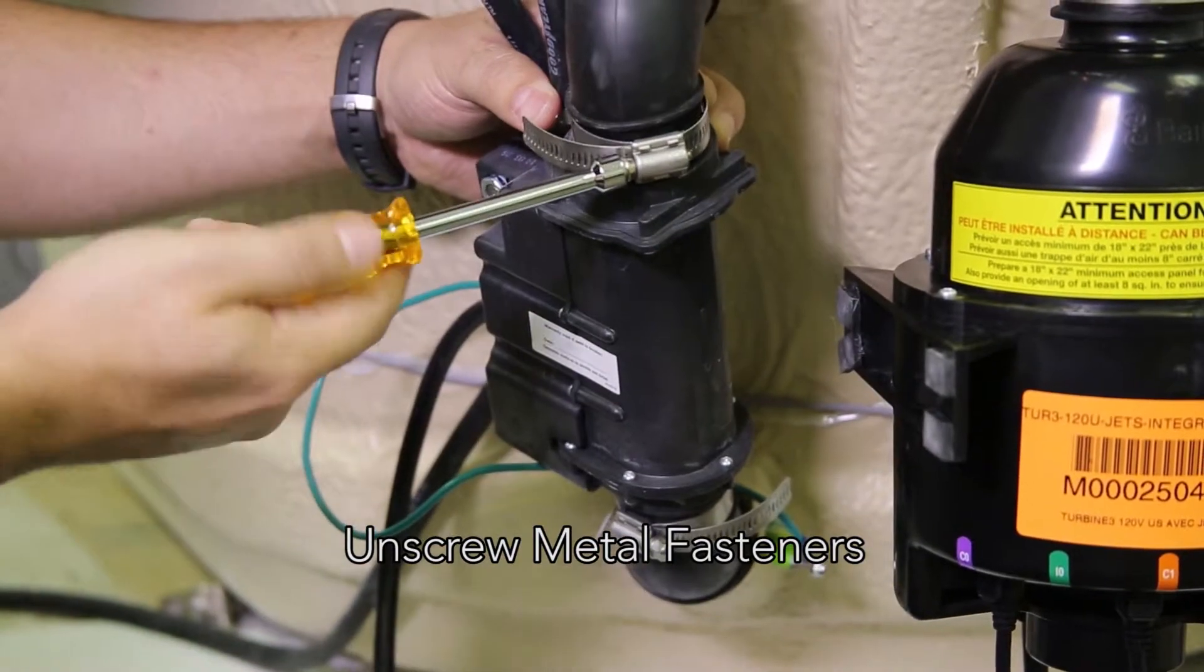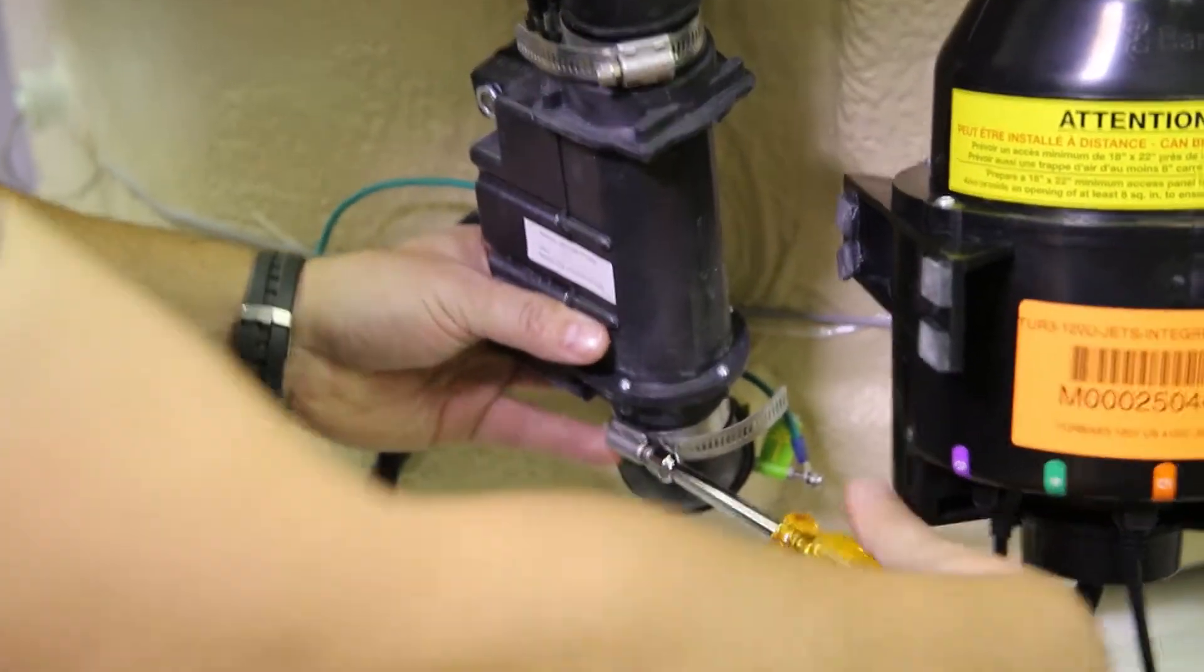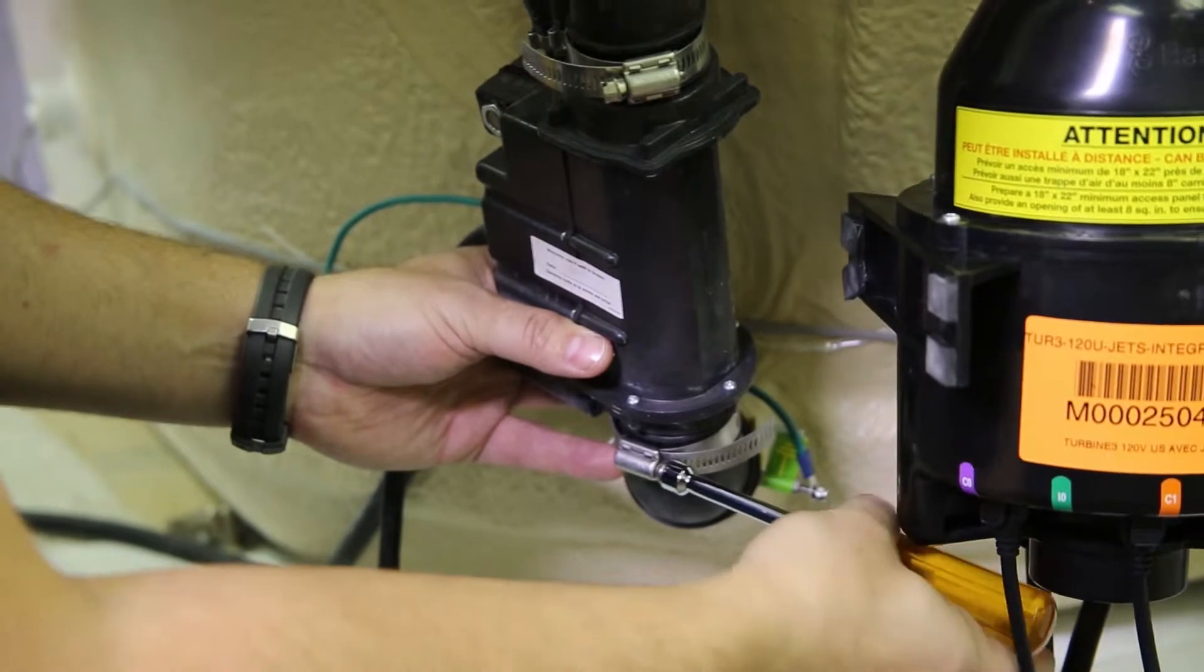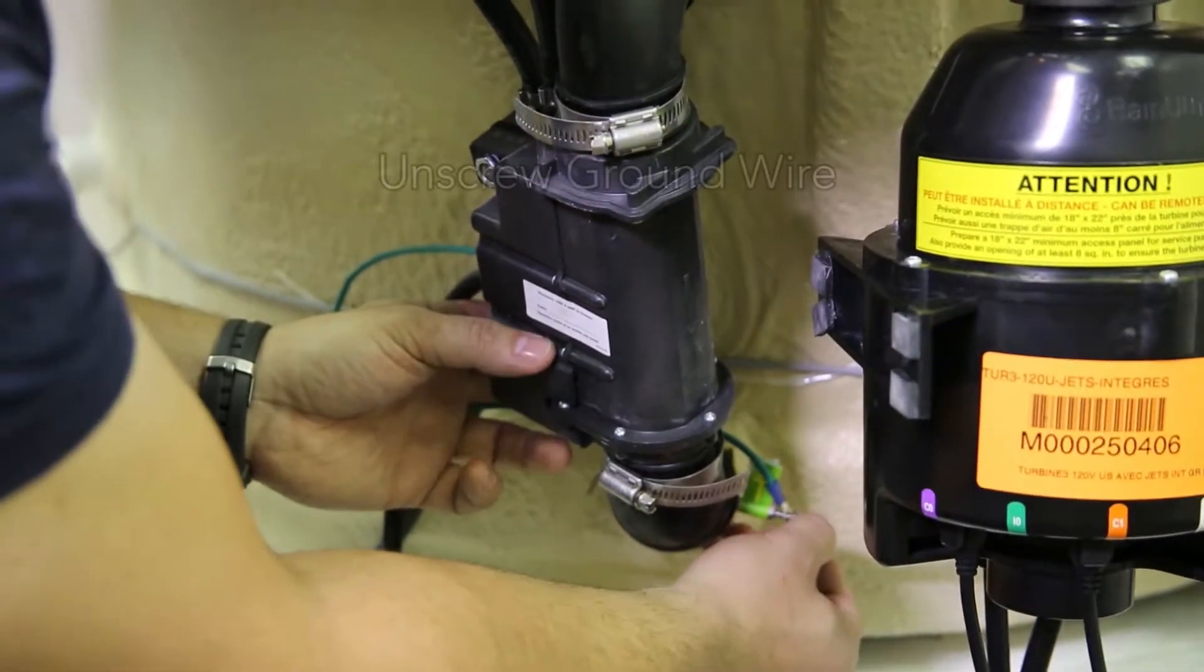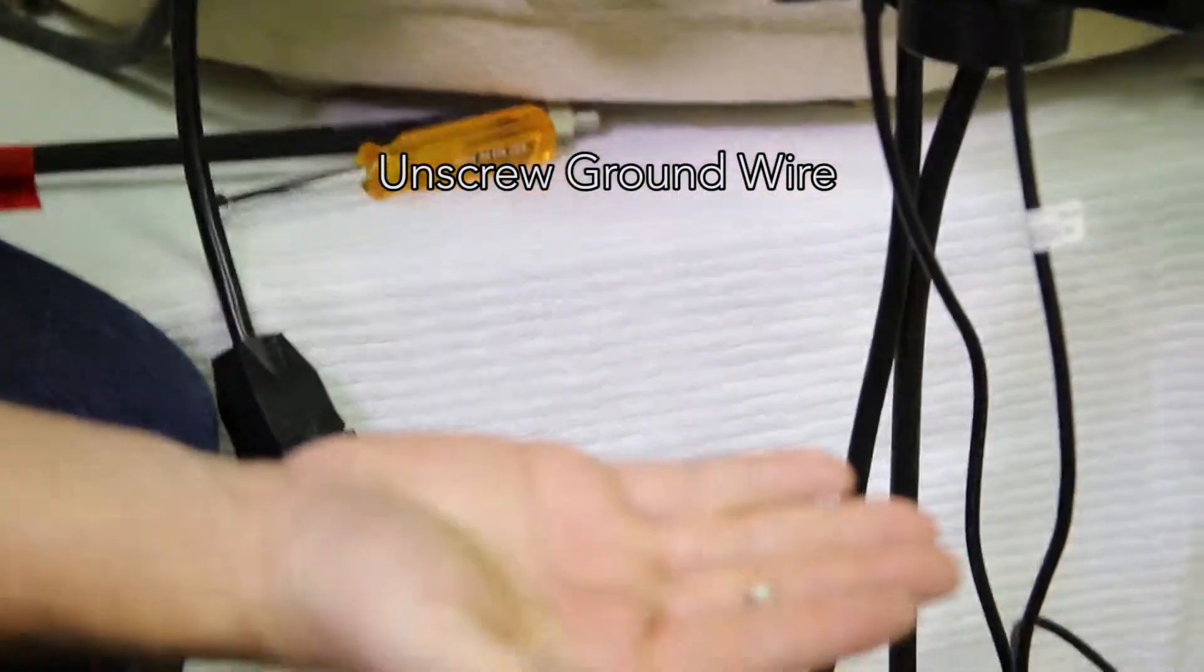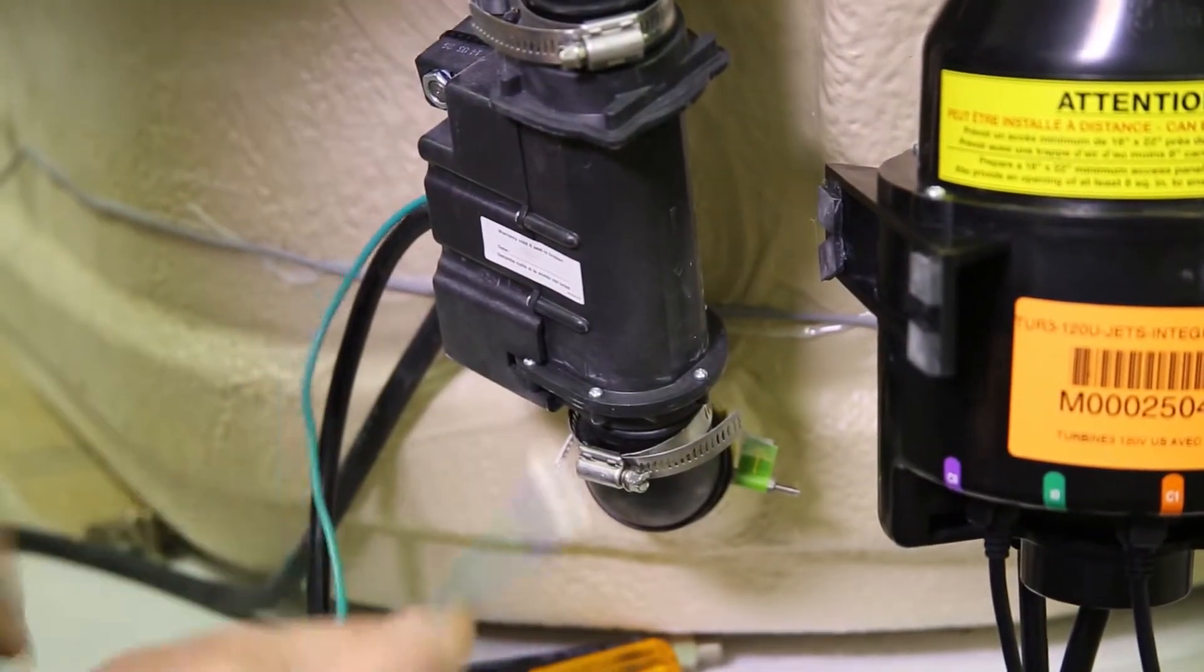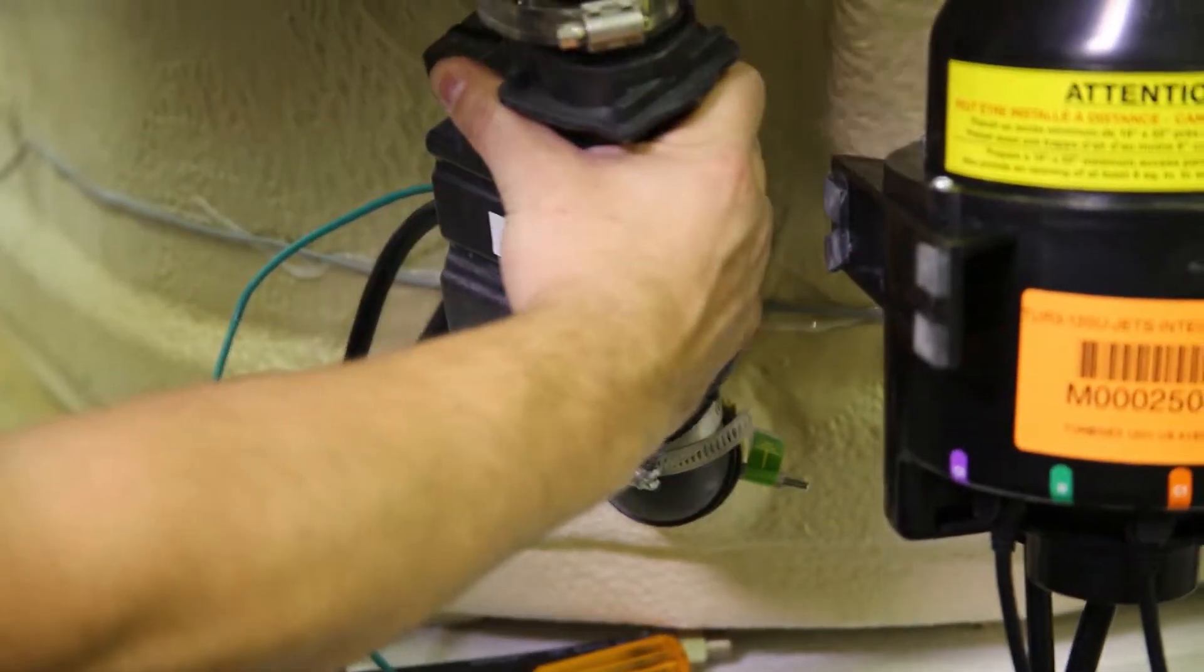That one's pretty much loose. Again, holding the part, unscrew that one. That one's pretty much loose here. I've pre-unscrewed this nut here for the ground, you're left with a nut like that. Put it down and just remove that small wire which has a lug on it. Now you're ready to pull it off.